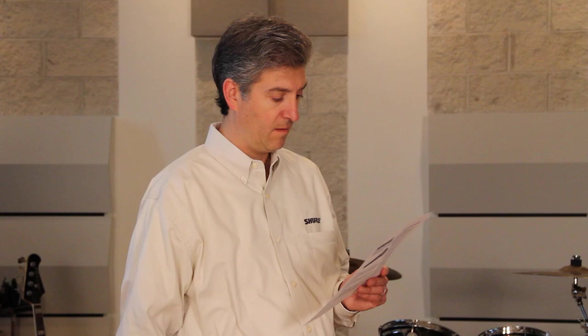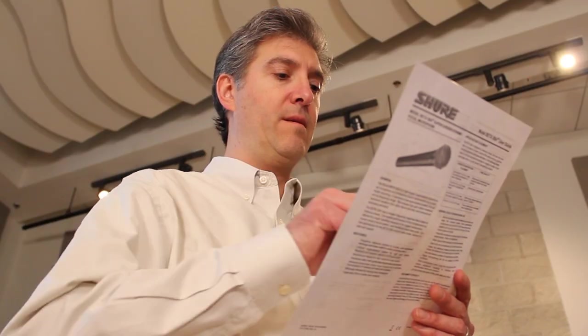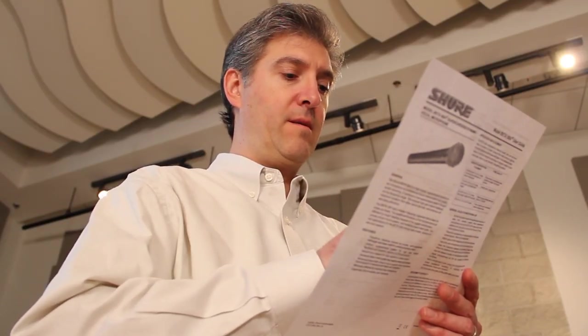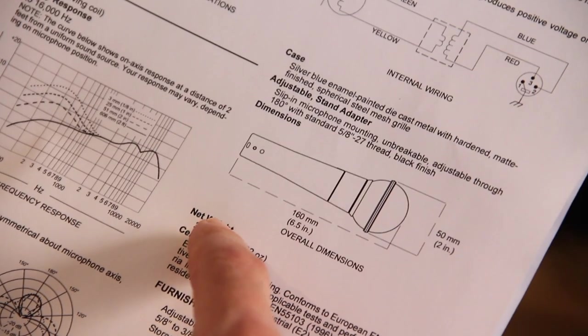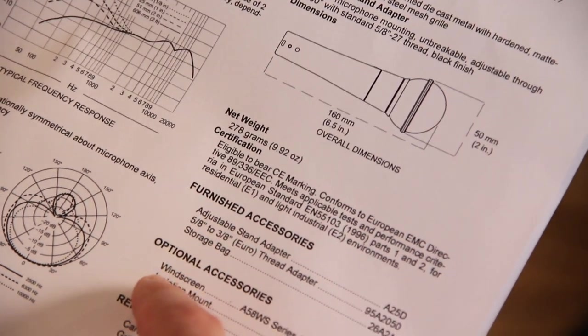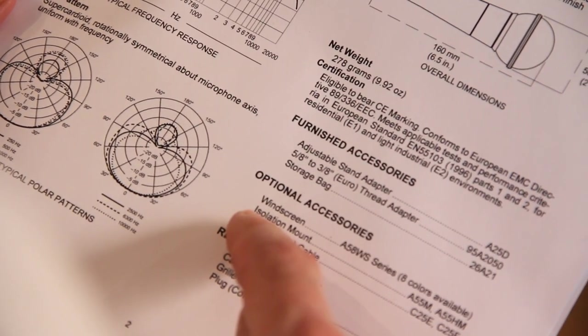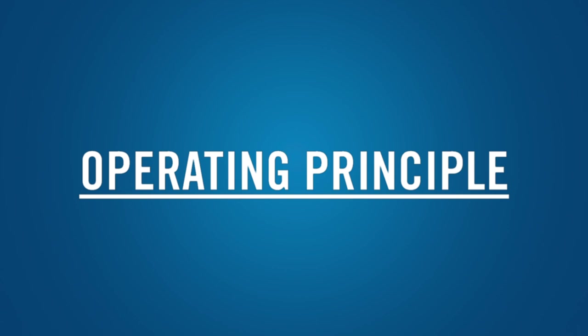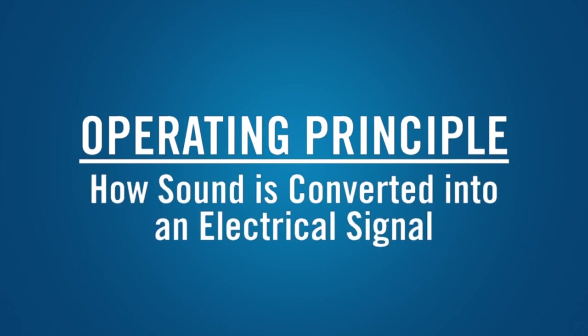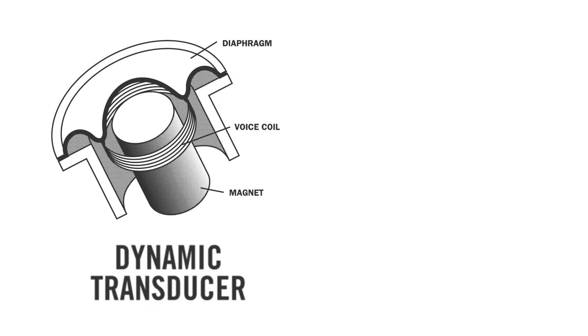To know how a microphone will work for a particular purpose, you need to check its technical specifications. These fall into four general categories. In this segment, we'll discuss the operating principle, which describes the type of transducer that the microphone uses to convert sound into an electrical signal. The most common transducer types are dynamic and condenser.